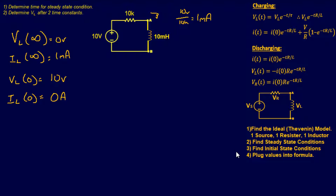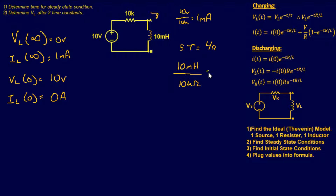Now we have the steady state and initial conditions. Step one asks us to determine the time for the steady state condition. That requires five time constants, and a time constant is L over R: 10 millihenries over 10 kilohms gives us one microsecond. So one time constant equals one microsecond, and the steady state condition is reached at five time constants, which is five microseconds.